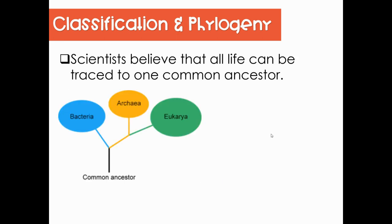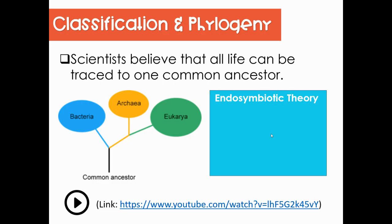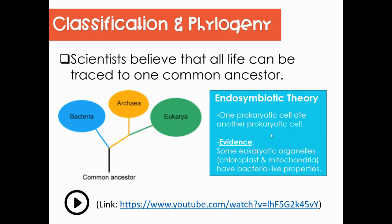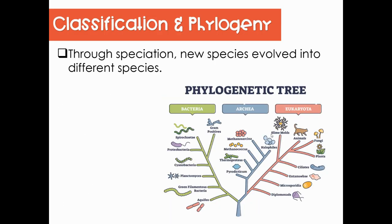Scientists believe all life can be traced to a common ancestor — this is the endosymbiotic theory, which we've discussed several times. This is the theory that one prokaryotic cell ate another prokaryotic cell in the earliest forms of life, creating our eukaryotic cells. Evidence supports this: both chloroplasts and mitochondria have bacteria-like properties. Through speciation from this common ancestor, different species evolved, and the tree of life helps us comprehend how that worked out.